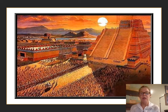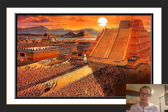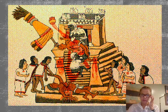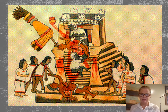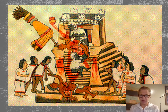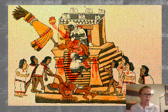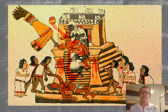They have codices — writings done by the Spanish and drawings done by the Aztec people themselves — that depict these events. Here is from one of those codices: human sacrifices taking place, blood just going down. It's also believed they did practice some form of cannibalism, but it was more for a spiritual purpose than for nutrients.